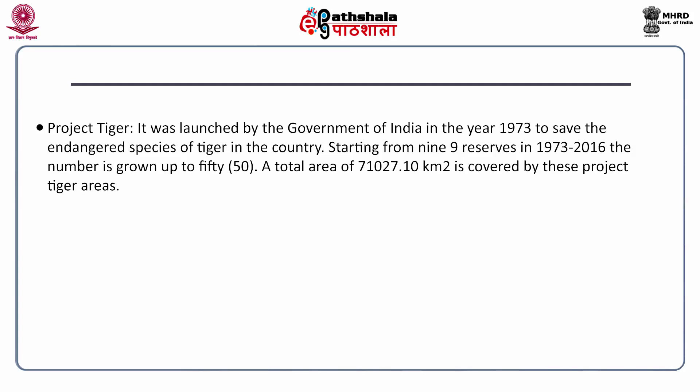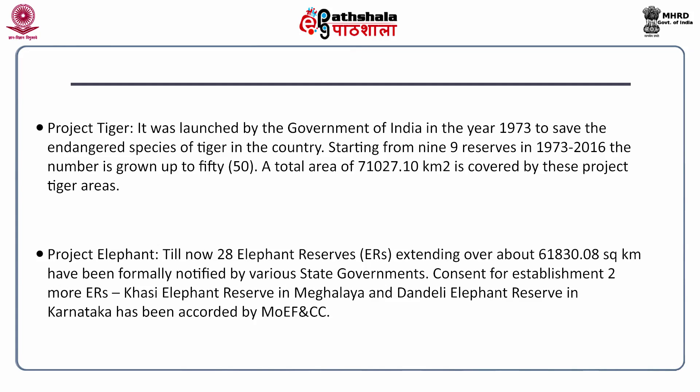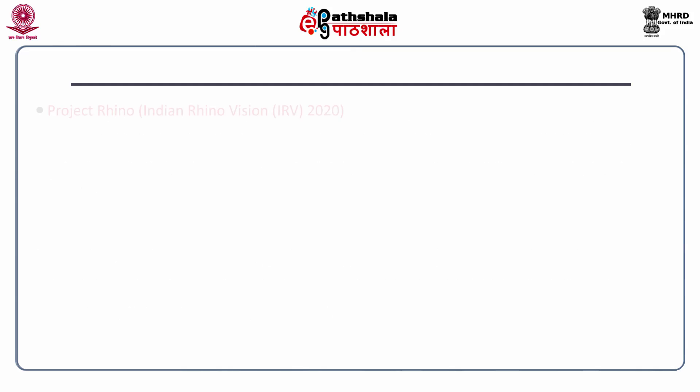The second prestigious project is Project Elephant, started for the protection of elephants. At present there are 28 elephant reserves in India, covering an area of about 61,830 square kilometers, formally notified by different state governments. Consent for establishing two more elephant reserves — Khasi Elephant Reserve in Meghalaya and Dundeli Elephant Reserve in Karnataka — has been accorded by the Ministry of Environment, Forest and Climate Change.